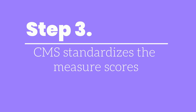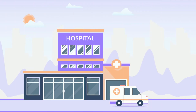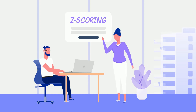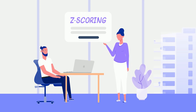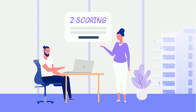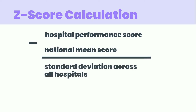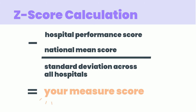In step 3, CMS standardizes the measure scores. CMS will take your hospital's performance on those CMS-selected measures and standardize the measure score so that it makes sense in the overall equation. Think about an inverse measure where lower scores are better — you wouldn't want that score to count against a total score, so they standardize all measure scores. This method of standardizing is called Z-scoring. The star rating Z-score is produced by subtracting the national mean score from each hospital's performance score, and then dividing that by the standard deviation across all hospitals. A standard deviation is a number that measures how far data values are from their average. This will give your hospital a standardized measure score for each measure.